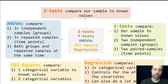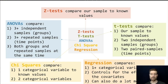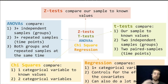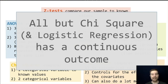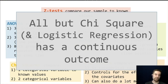Last but not least is regression. It can handle one or more categorical variables, controls for the effects of covariates, and can even handle categorical outcomes via logistic regression. A lot of what regression is used for is continuous outcomes. Regression ultimately is a really flexible approach that takes a lot from all these other methods. Notably, all methods except chi-square and logistic regression have a continuous outcome. If possible, a continuous outcome variable gives you the most flexibility.